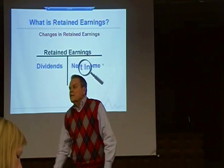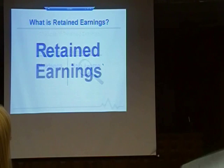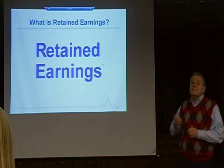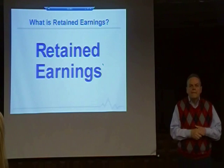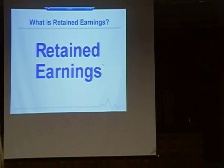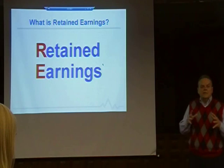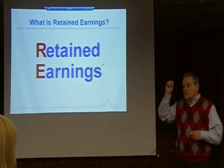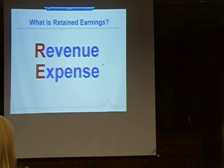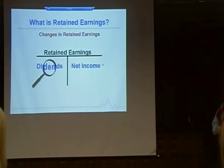Let's not be afraid to state the opposite. How do you get net income? Revenue minus expenses. Retained earnings is revenue and expense — the combination, the net result. Look at the screen: what makes up retained earnings but revenue and expense? Retained earnings is increased by net income and decreased by dividends. Retained earnings originated with the excess of revenue over expense.